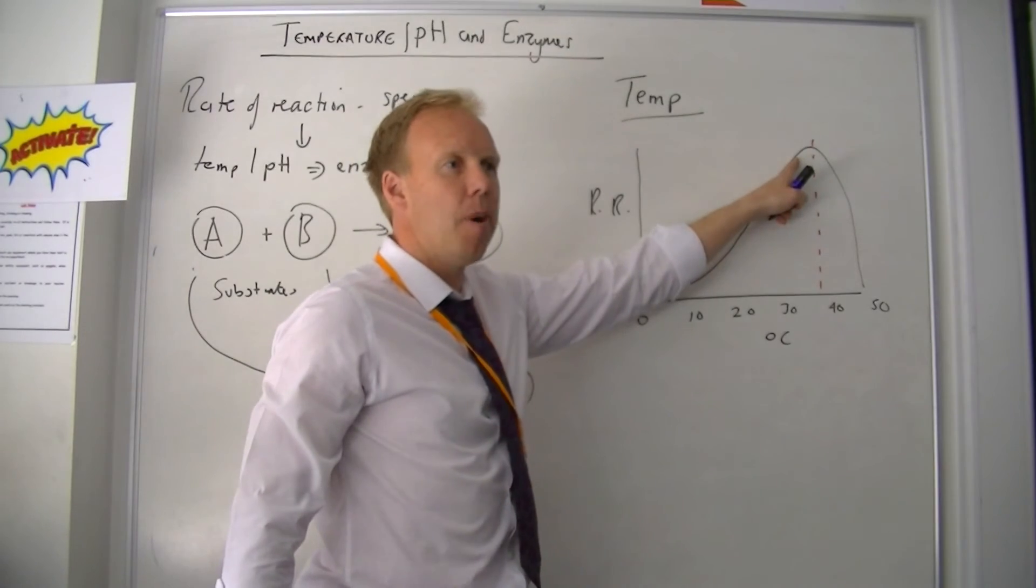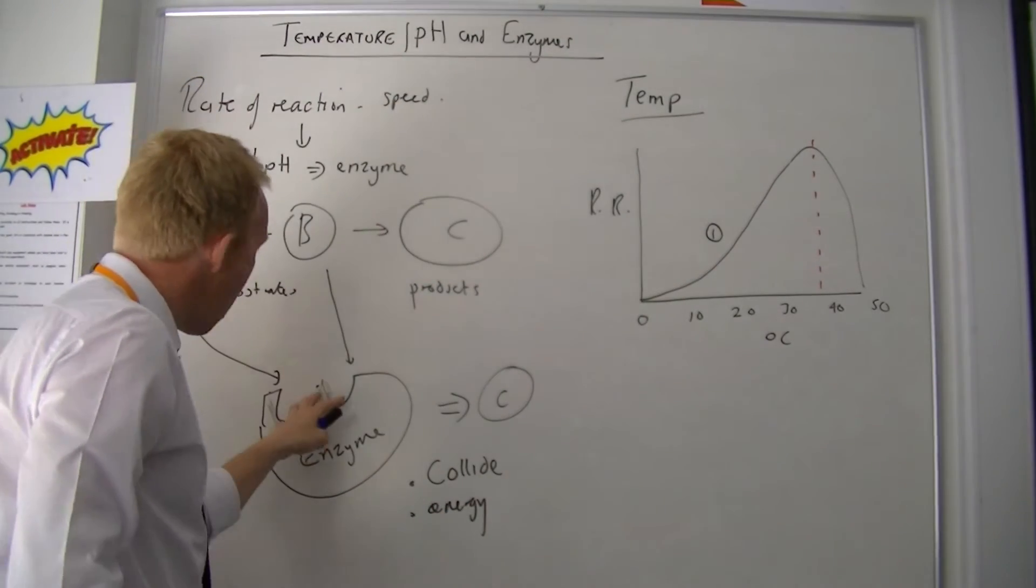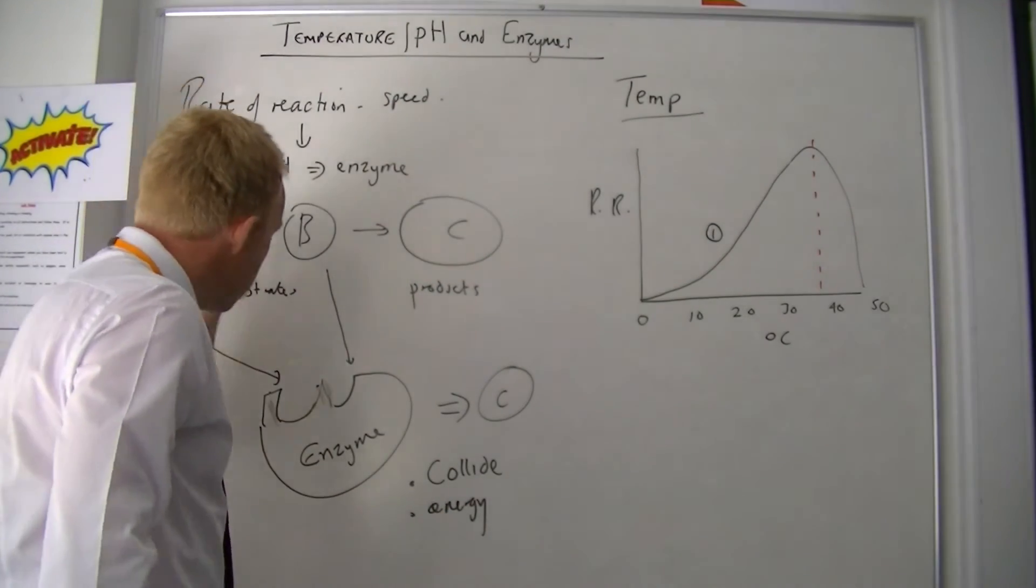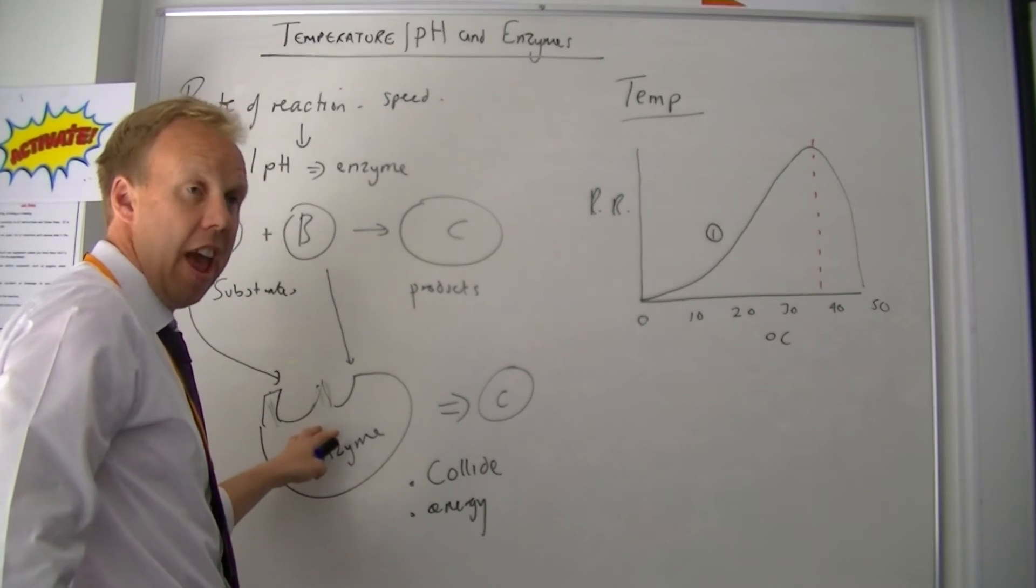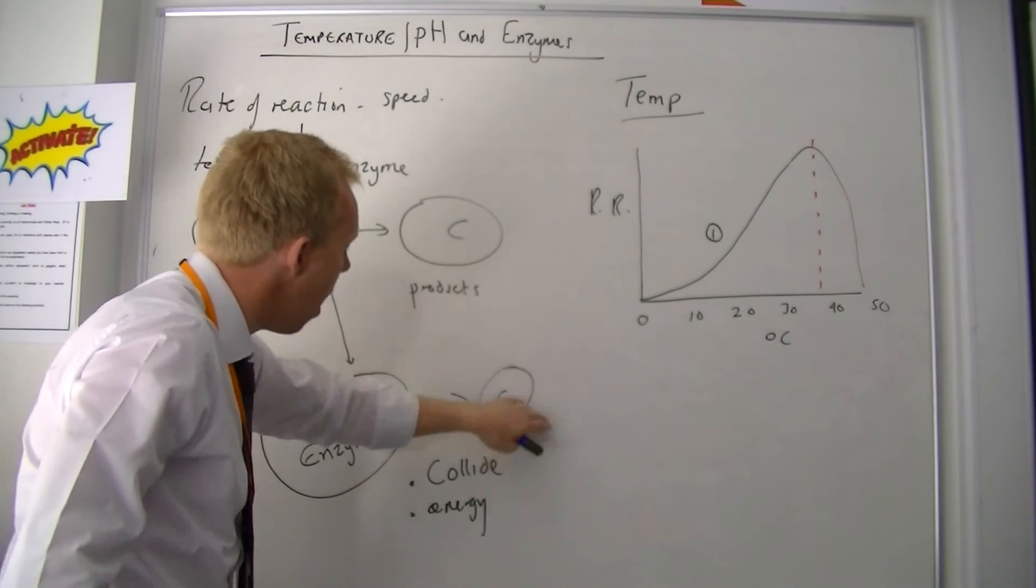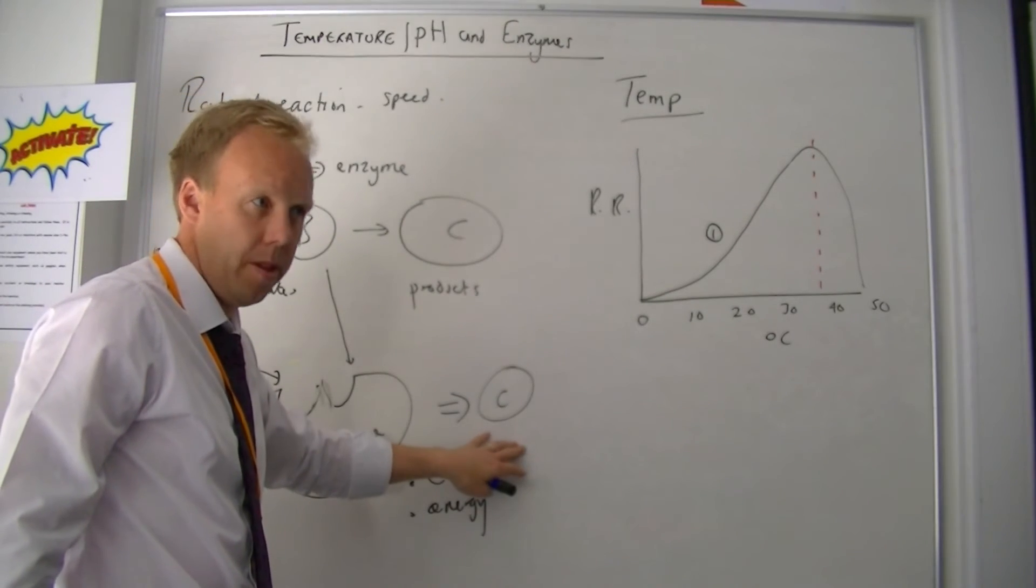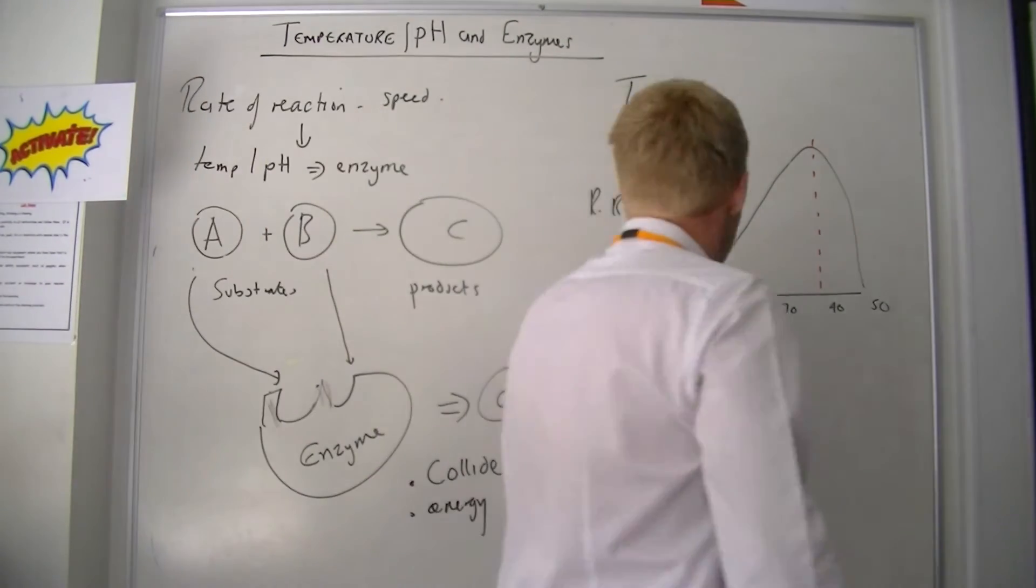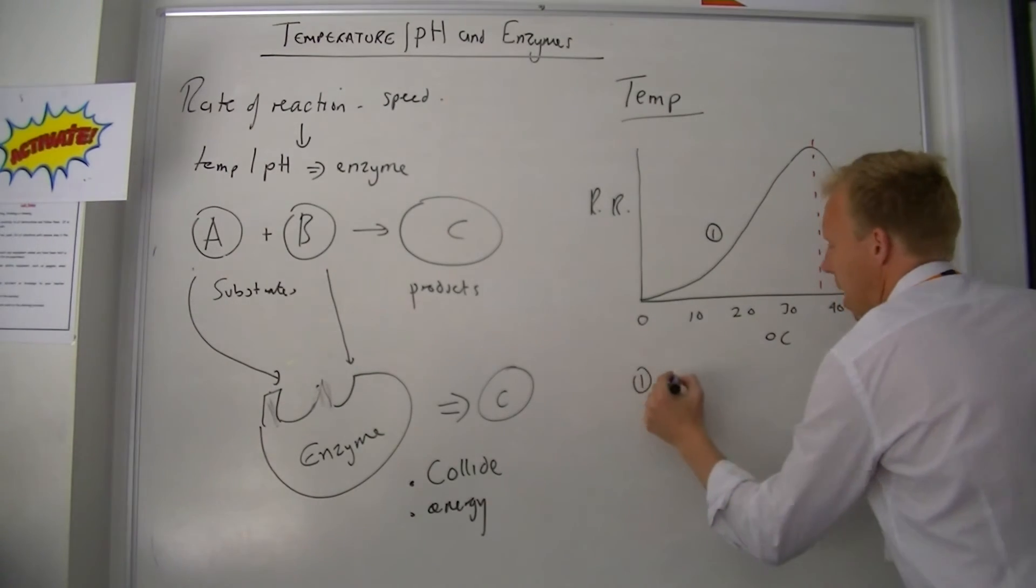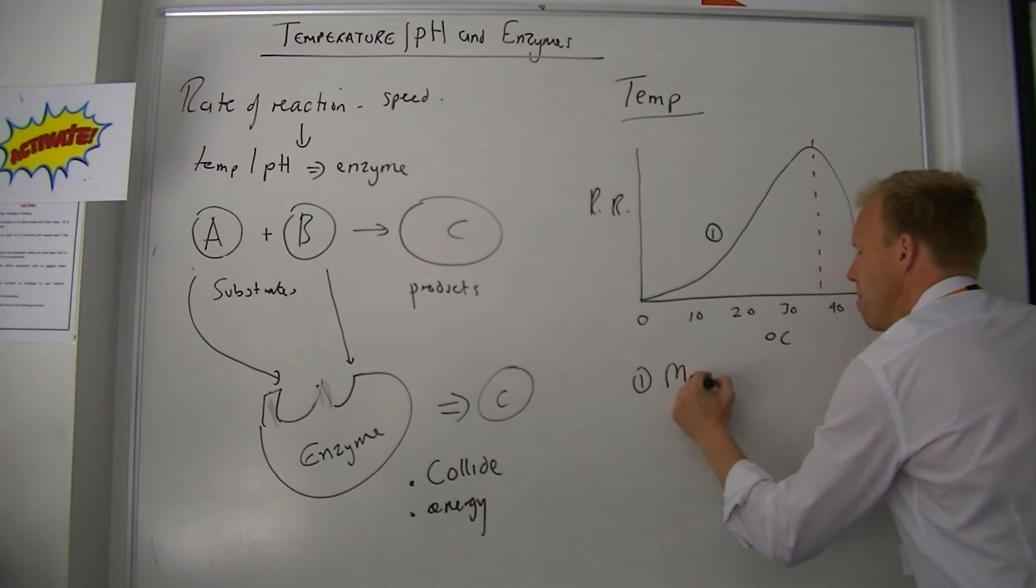And that is why the rate of reaction increases, because there'll be more collisions, there'll be more energy in those collisions, so you'll get more C. So part one: there will be more collisions because the particles have more energy, so you'll make more products.